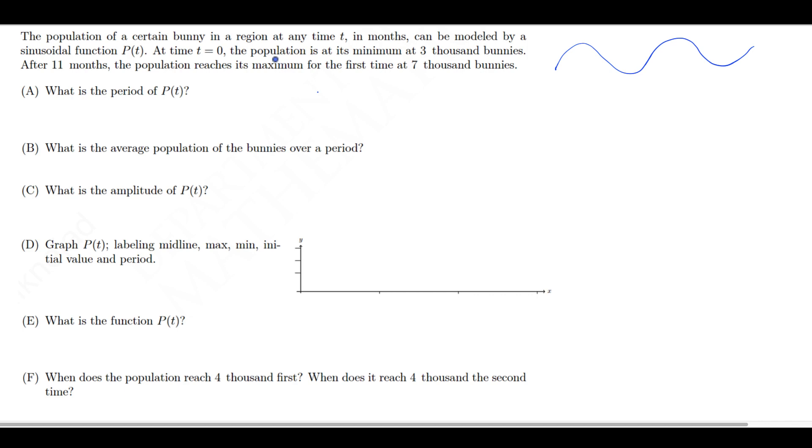At time t equal to zero, the population is at its minimum, that's 3,000 bunnies. After 11 months, the population reaches its maximum for the first time at 7,000 bunnies. Going from a minimum to a maximum is basically half of the period. So I know that this information is giving me half of the period.